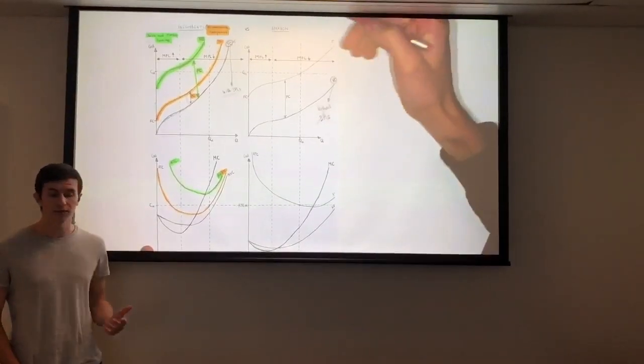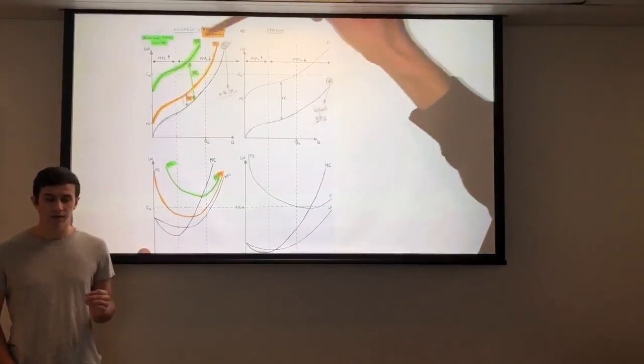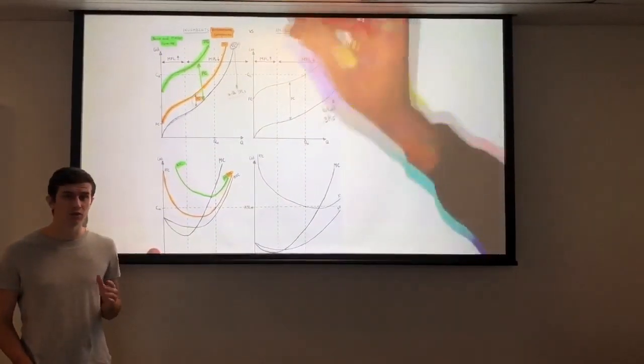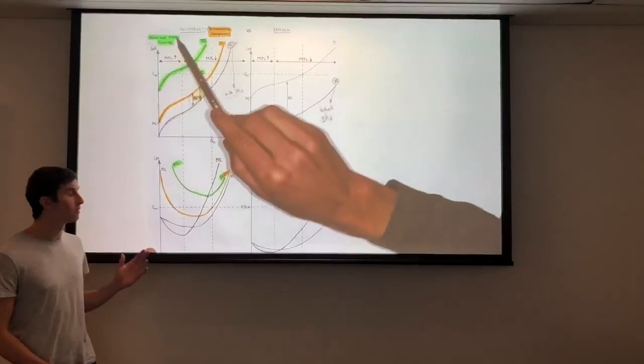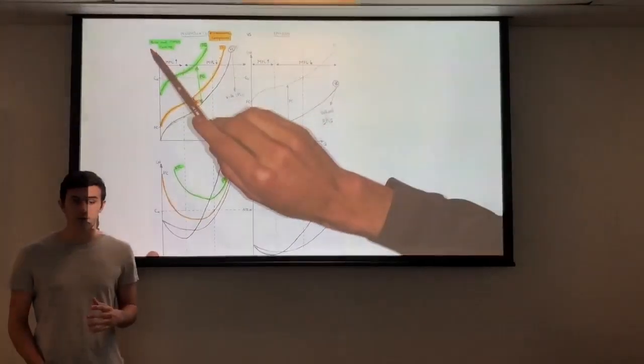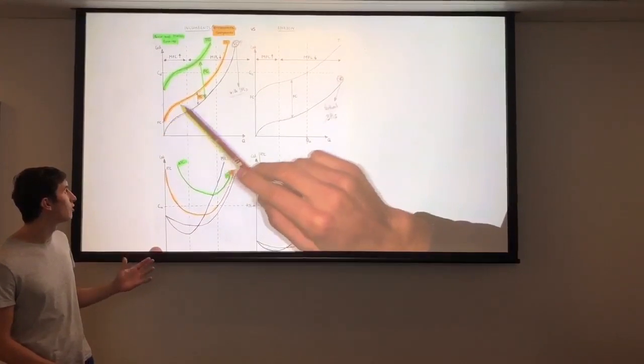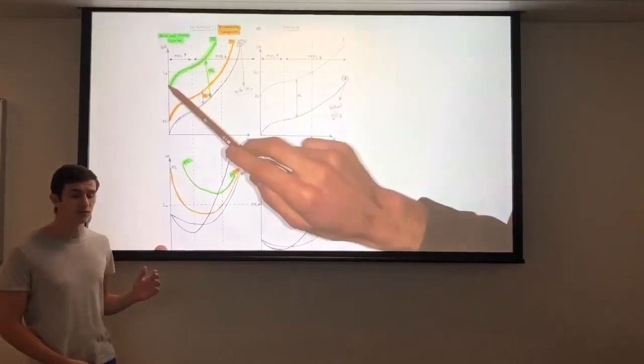In the graphs, we consider e-commerce companies being the incumbents because of the importance of their expansion. However, similar conclusions also apply to traditional brick-and-mortar retailers. Looking behind me, orange highlighted is e-commerce companies and green is traditional brick-and-mortars.